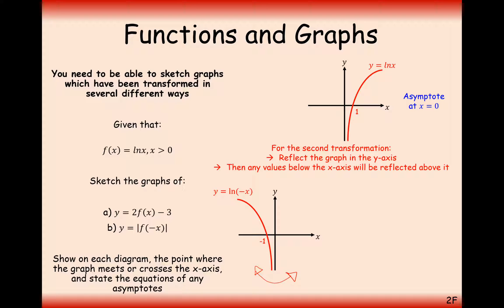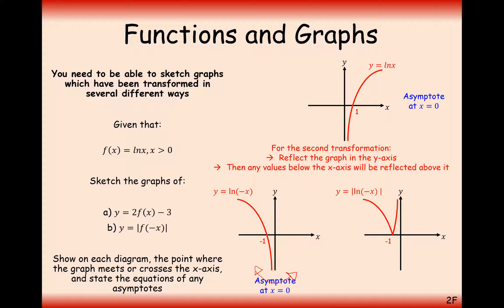It looks a little bit like this, and the x=1 intercept will move to x=minus 1. Now we need to apply the modulus. Modulusing the whole graph just moves the bottom part — any negative y-coordinates — onto the top. So the bottom part is going to be reflected to the top, and the top stays where it is. Applying the modulus transformation gives us our final answer graph.